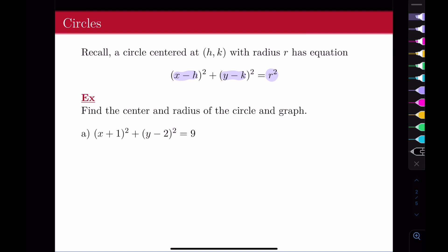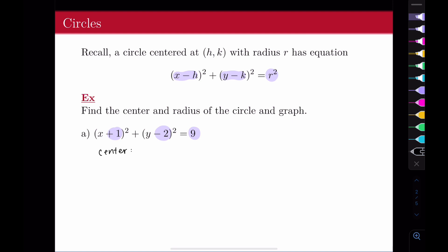Let's do a couple examples. We're going to find the center and the radius of the circle, and then graph it. Looking at this expression, it's already in standard form, so I can immediately use these values. For a circle, the center is the opposite of each of these values. So the x-coordinate of the center is negative 1, the y-coordinate is 2. The radius is the square root of 9, so the radius is 3.